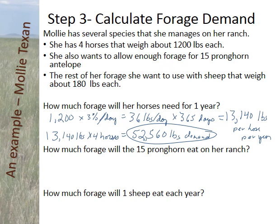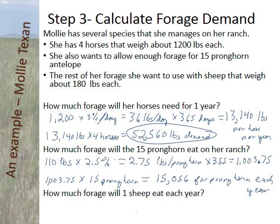She also wants to allow enough forage for 15 pronghorn she sees regularly on the ranch. Each pronghorn weighs about 110 pounds. They're ruminants, so they eat 2.5% of their body weight per day — 2.75 pounds per day — times 365 days in a year, which means each pronghorn eats 1,003.75 pounds per year. Multiplied by 15 pronghorns, that gives a total demand of 15,056 pounds for all pronghorn on Molly's ranch each year.